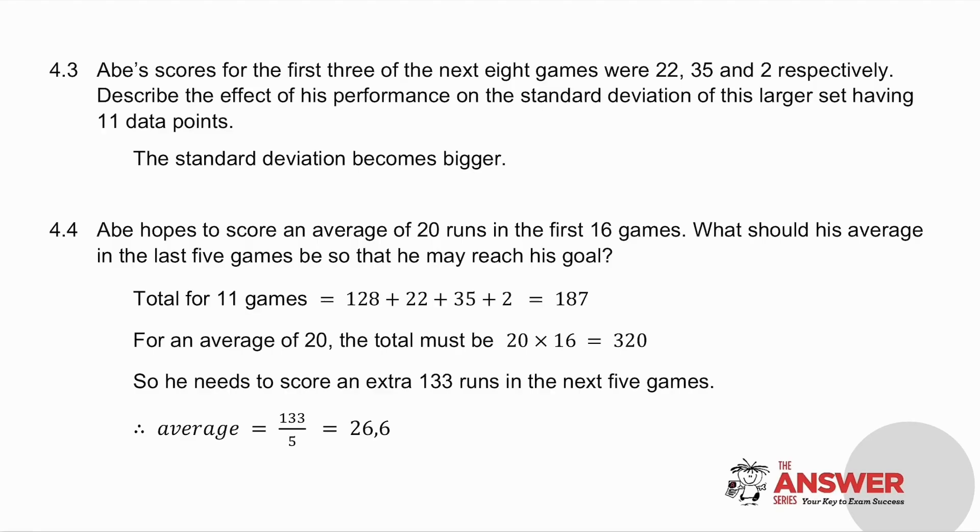4.3, they've given you the next three scores that he gave. And they said, describe the effect of his performance on the standard deviation. Now, you can do it in two ways. You can either work out the new standard deviation, so you add these three values to the previous data set, and work it out. Or, you can look at it and say the following. 35 and 2 is quite far spread from the other data. Now, remember, your standard deviation gives you an indication of how the data is spread. So if I add two more values that are more spread than the previous data, it will make my standard deviation bigger, because the data will be more spread.